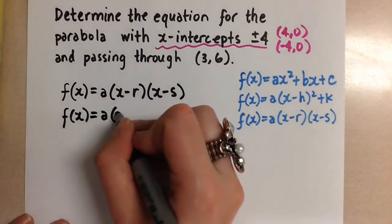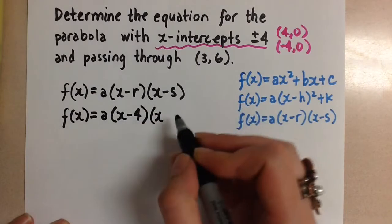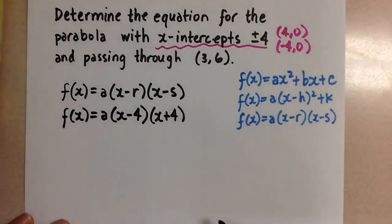And this is what we get, so x minus 4, and then x minus negative 4 gives us x plus 4, so be careful with your positives and negatives there.